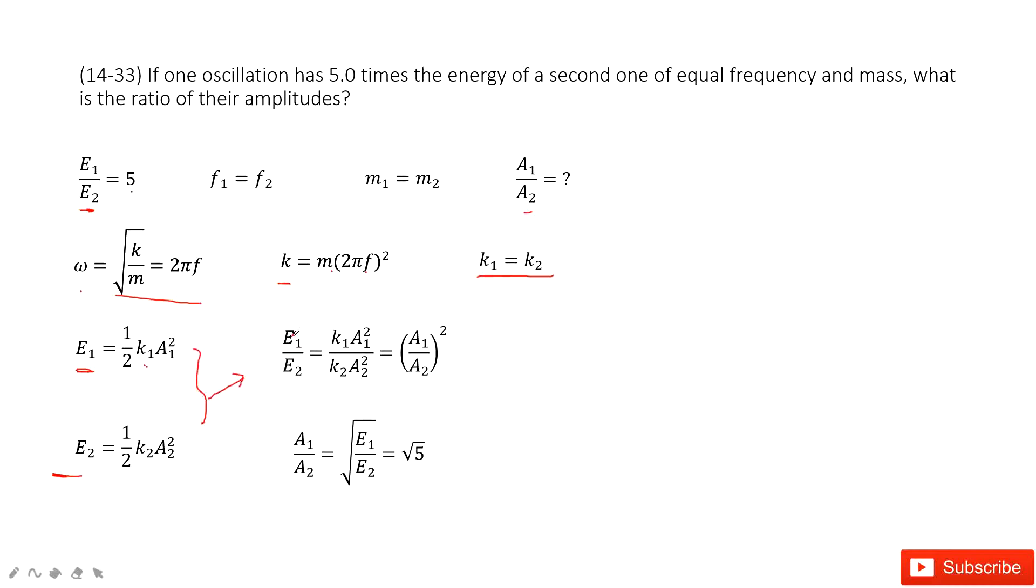When we write the equation for ratio E1 over E2, k1 and k2 are equal, so they cancel. We get A1 over A2 squared. So we can find the ratio A1 over A2 is the square root of E1 over E2, which equals square root of 5.